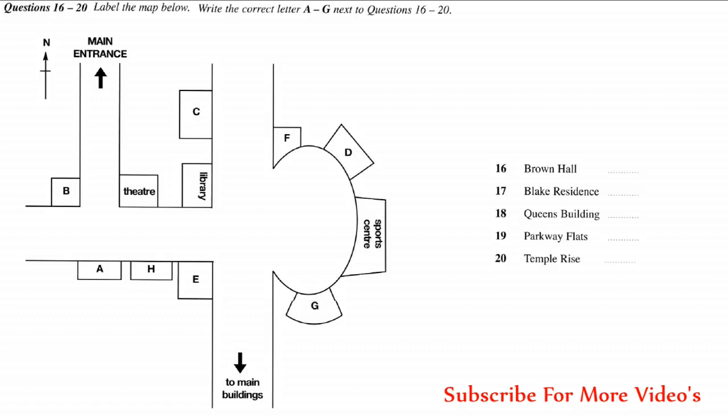Now, if I can just show on this wall map here where they all are, you might like to go and have a look round. If you come into the main university entrance, at the first junction, you'll find that Brown Hall is on the corner opposite the theatre. So, you're nice and near the station here, though I think it can get a bit noisy with traffic.